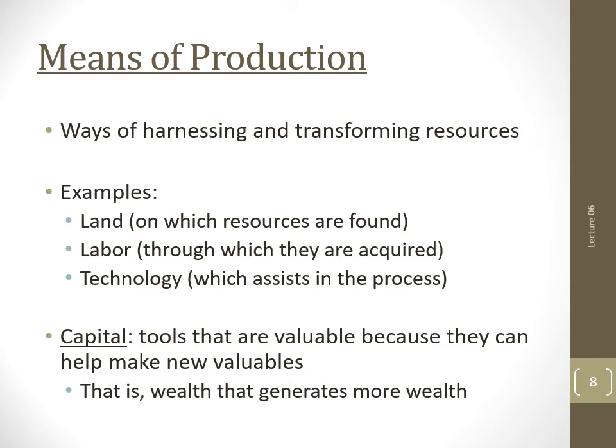To achieve that transformation, we must have means of production — ways of harnessing and transforming resources. Means of production include land, on which resources can be found; labor, through which they can be acquired; and technology, or capital, tools that are valuable because they can help us make new things that are valuable. The means of production are scarce, just like natural resources, so we must make decisions about how to use them. As an example, let's examine how a culture's subsistence strategy affects the use of land, one of the most important means of production.